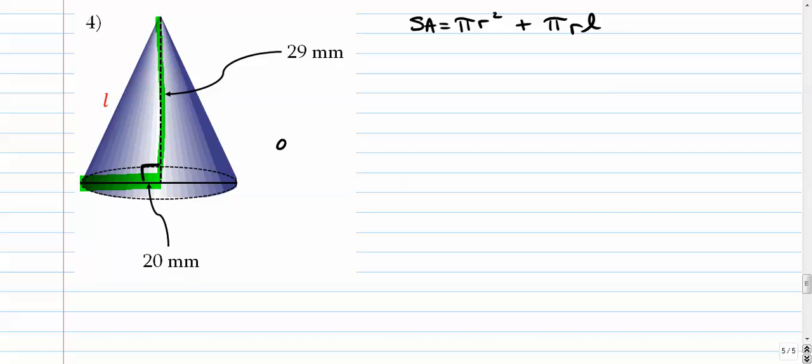The height is 29, the slant height we don't know. This is a right triangle so we can use our Pythagorean theorem.